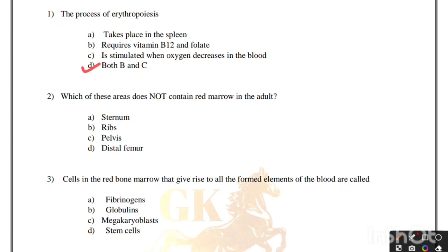Which of these areas does not contain red marrow in the adult? Options: sternum, ribs, pelvis, distal femur. Correct answer is option D, distal femur.